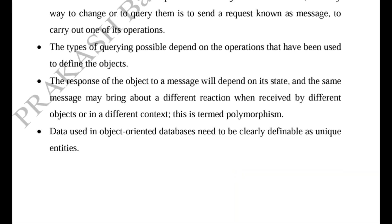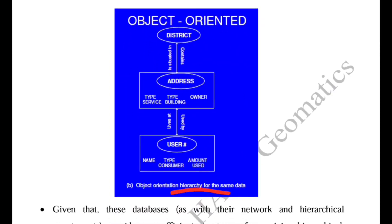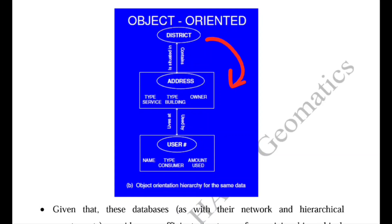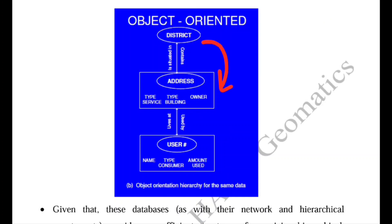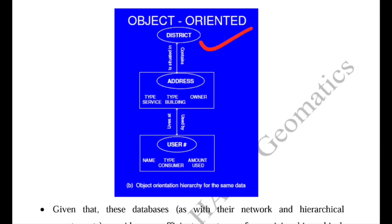Data used in the object-oriented database need to be clearly definable as unique identities or entities. For example, if we want to store district information, we store all its characteristics: address, type of service, type of building, owners, consumer names, amount used, and user information. Every district will have a different name or unique ID.